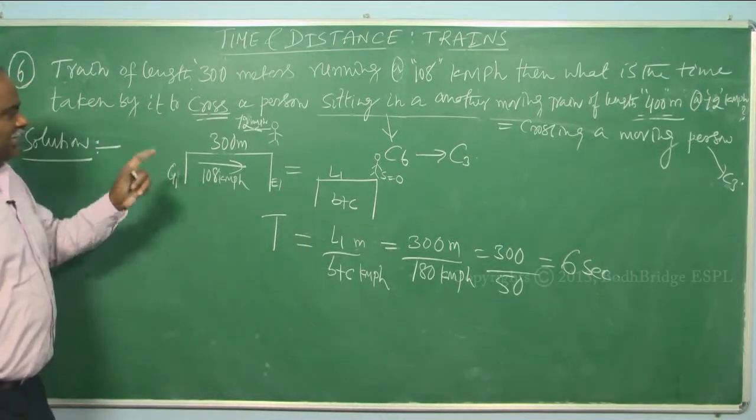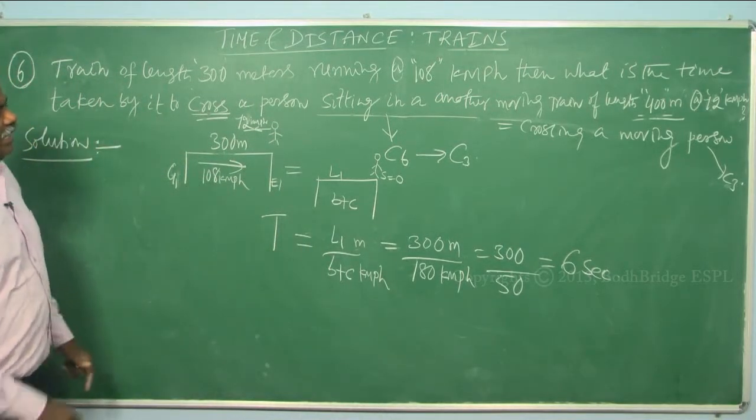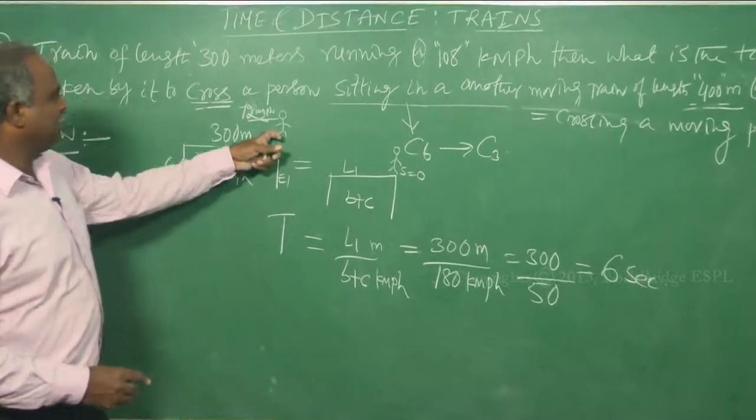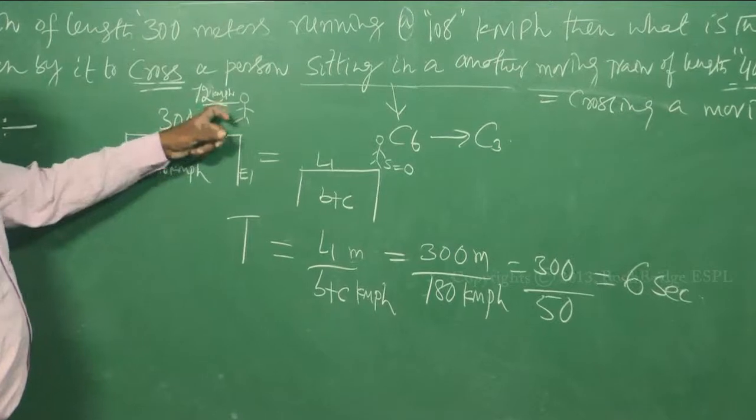Now I said that c6 is equivalent to c3. Here the train is moving but we need not cross the train, so we need to cross a person, just to relate to the previous concept I gave earlier.